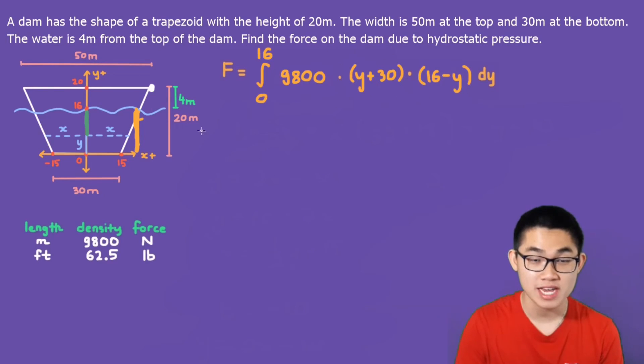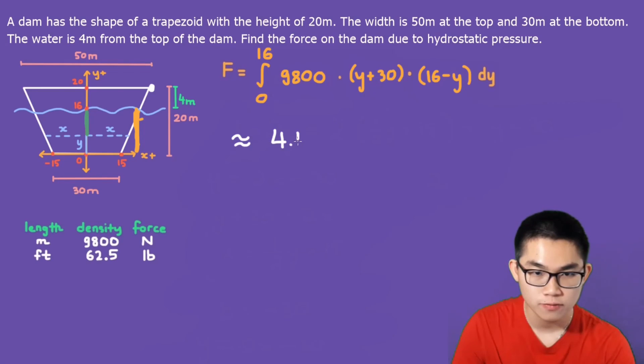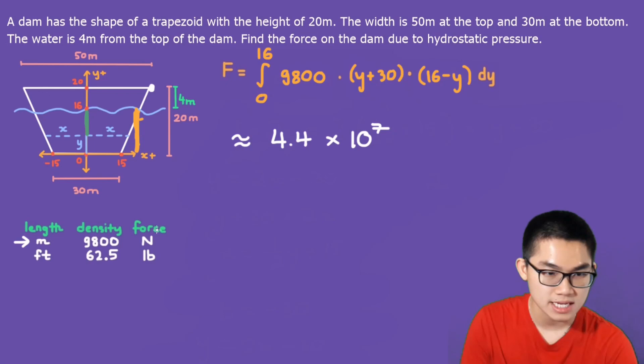This integral is very easy to do. So let me save you your time. And after you solve it, you should get 4.4 times 10 to the power of 7. And what's the unit? Well, looking at this table, the problem is in meters. So the final answer is the force, which is newtons.